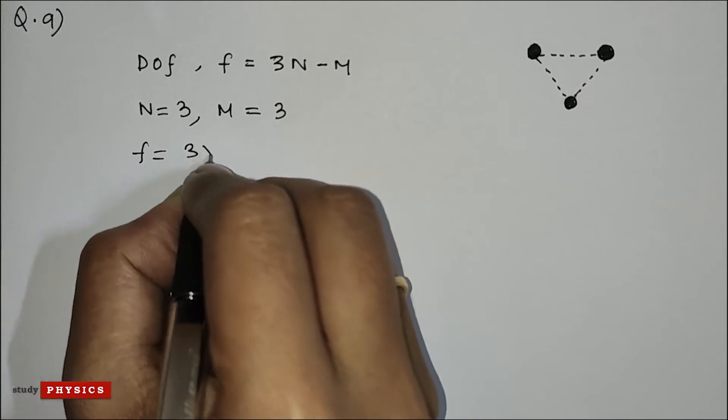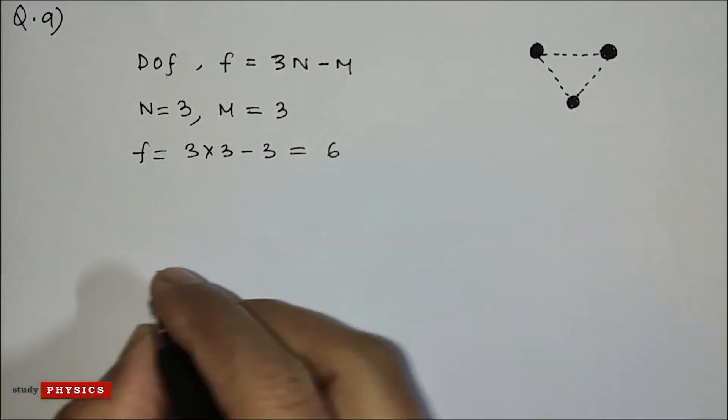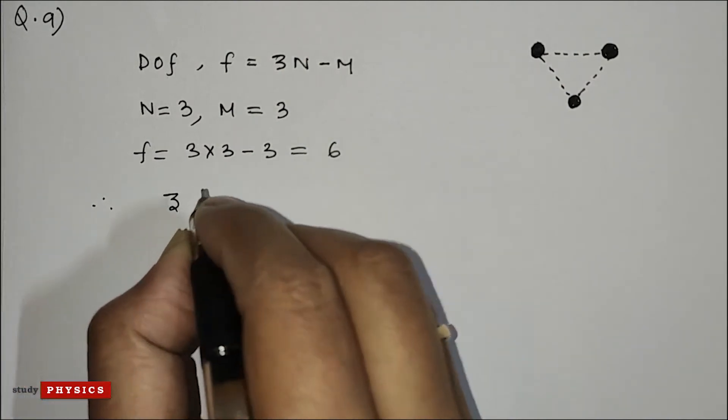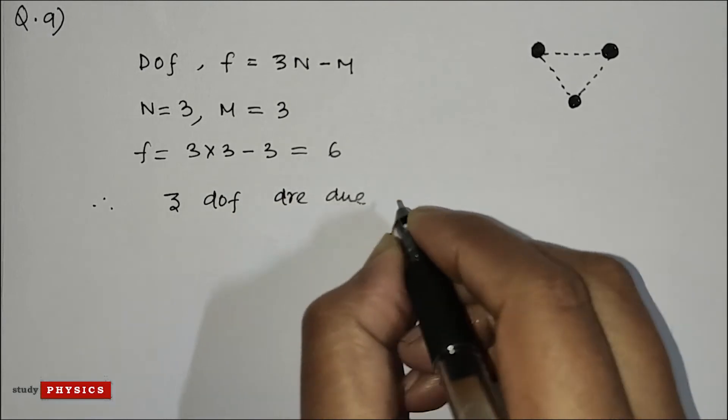That means F equals 3 times 3 minus 3, which is 6. So here, three degrees of freedom are due to translation.